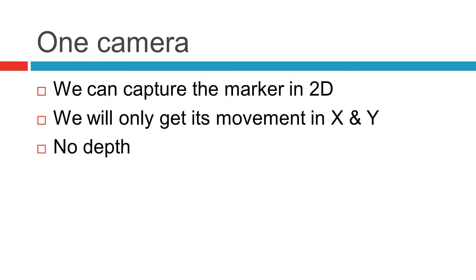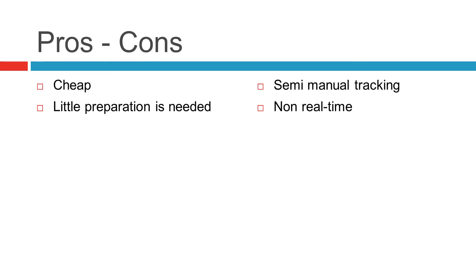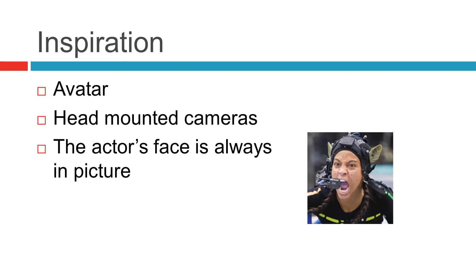With one camera we are able to capture movement in 2D, meaning that we will only get data along the X and Y axis, leaving us with no depth. As you can see from the example, the front view looks good but the side clearly shows a lack of depth information. The upside is that it's cheap — you can use virtually any camera that can record video and the preparation time is only a fraction compared to a fully fledged motion capture rig. The downside is that the technique relies on semi-manual tracking and interpretation. It's a process where the artist needs to identify every marker and track them throughout the recorded clip, making it a non-real-time solution. In my case, the one-camera solution was the most suitable, and the inspiration for this came from the movie Avatar.